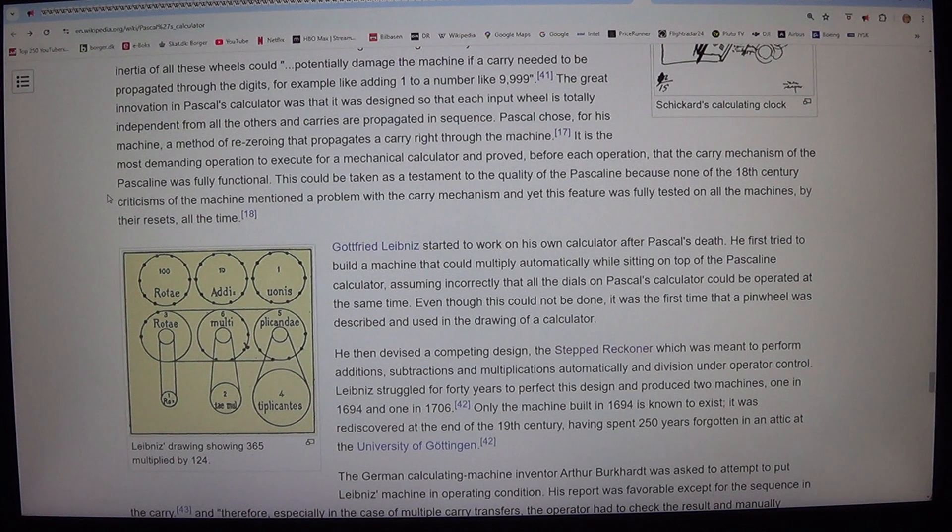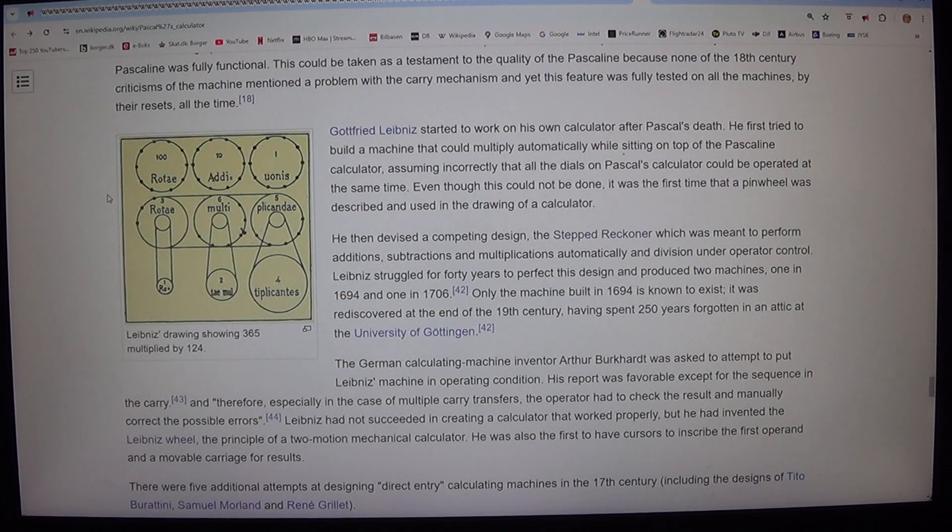Leibniz drawing showing 365 multiplied by 124. Gottfried Leibniz started to work on his own calculator after Pascal's death. He first tried to build a machine that could multiply automatically while sitting on top of the Pascaline calculator, assuming incorrectly that all the dials on Pascal's calculator could be operated at the same time. Even though this could not be done, it was the first time that a pinwheel was described and used in the drawing of a calculator.